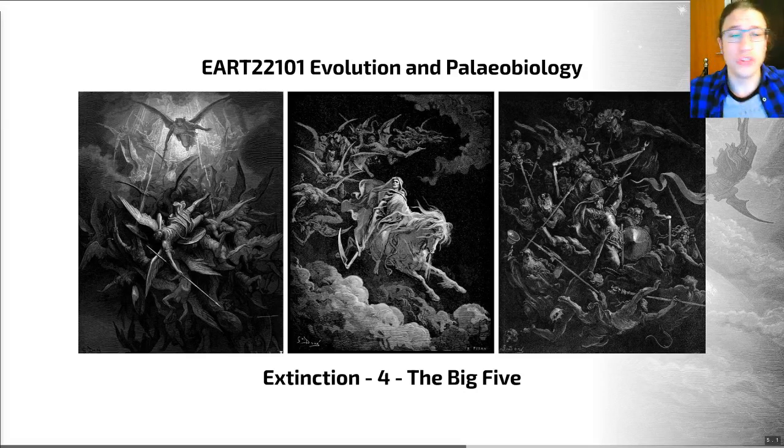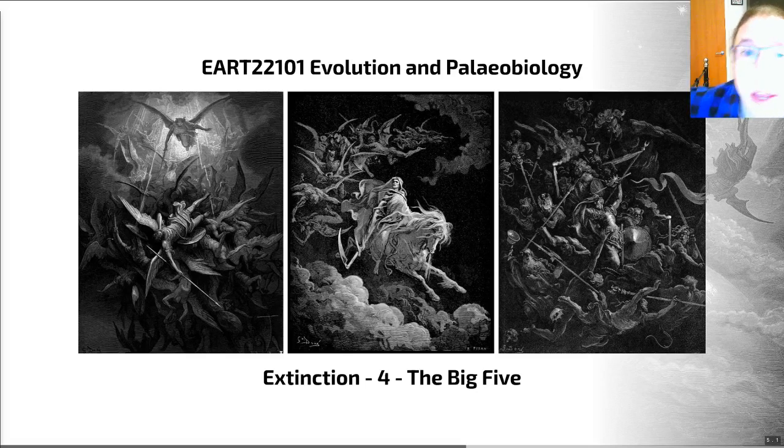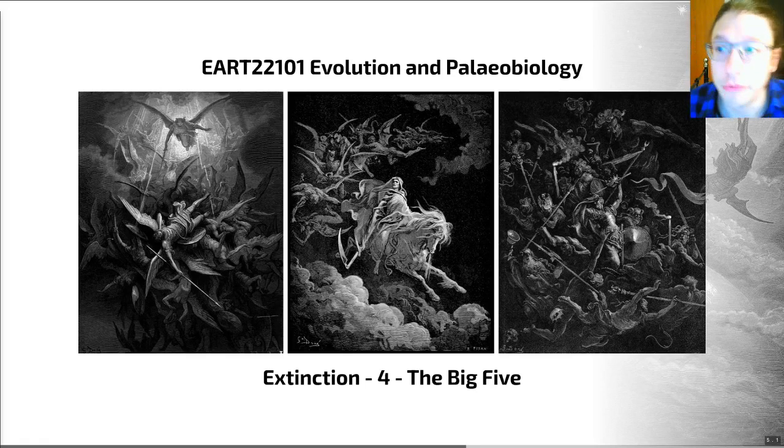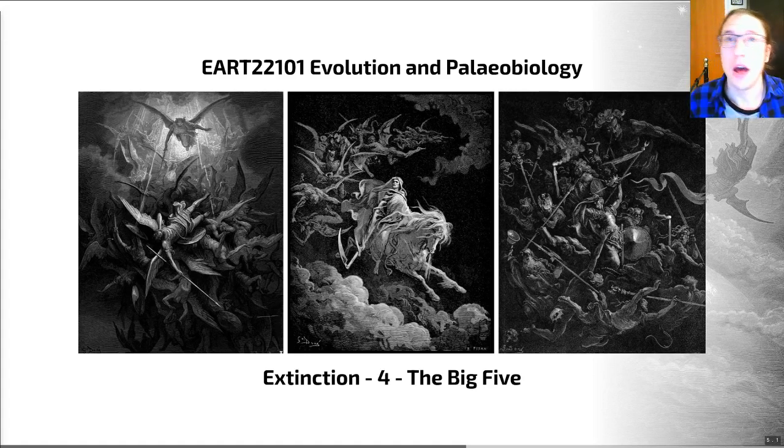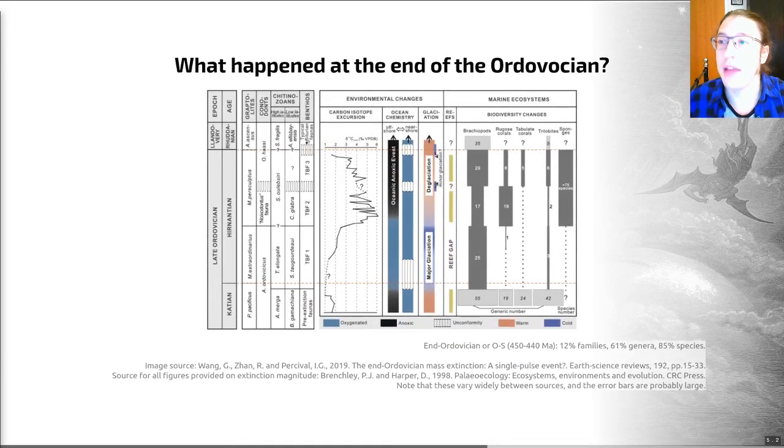Hello there and welcome back to Extinctions. This is video number four and in this video we're going to be looking at an overview of the big five mass extinctions from the Phanerozoic, the period of time where we have complex animal fossils and plant fossils to help us understand these events. We'll be looking at each of the five in turn, what fauna they impacted and the possible causes of each extinction.